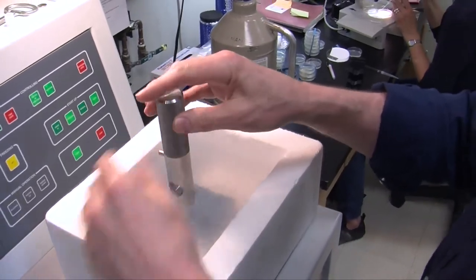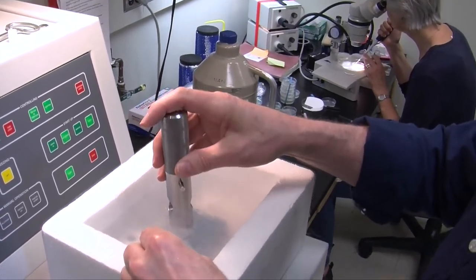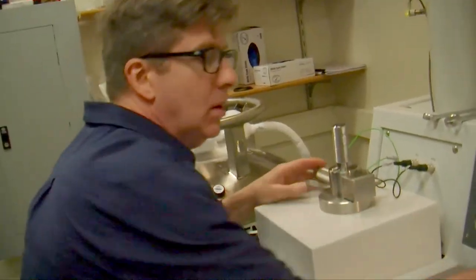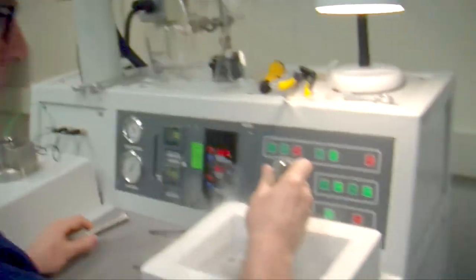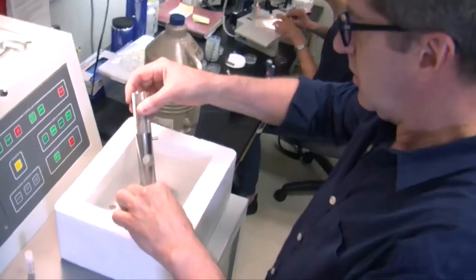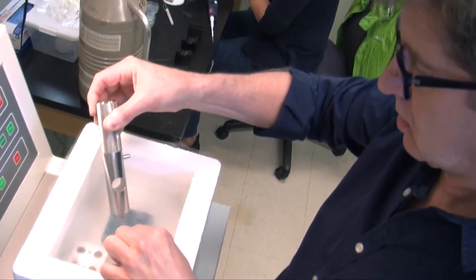So you freeze these samples so fast that they're frozen into vitreous ice, and then with the freeze substitution part of the process, we can take these samples that we've frozen and we can embed these samples in plastic so we'll be able to maintain that ultrastructural preservation at room temperature. That means that they're basically fixed forever.